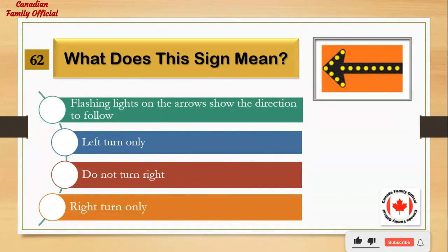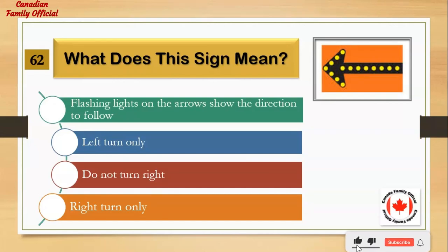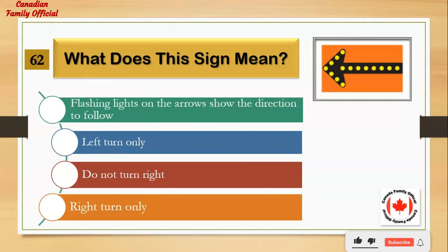What does this sign mean? Number 1: flashing lights on the arrows show the direction to follow. Number 2: left turn only. Number 3: do not turn right. Number 4: right turn only. And the answer is: flashing lights on the arrows show the direction to follow.